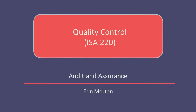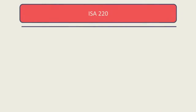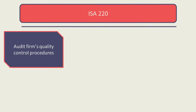This video is going to cover the topic of quality control. This relates directly to the auditing standard ISA 220, quality control for an audit of financial statements. This auditing standard focuses on the audit firm's own quality control procedures.